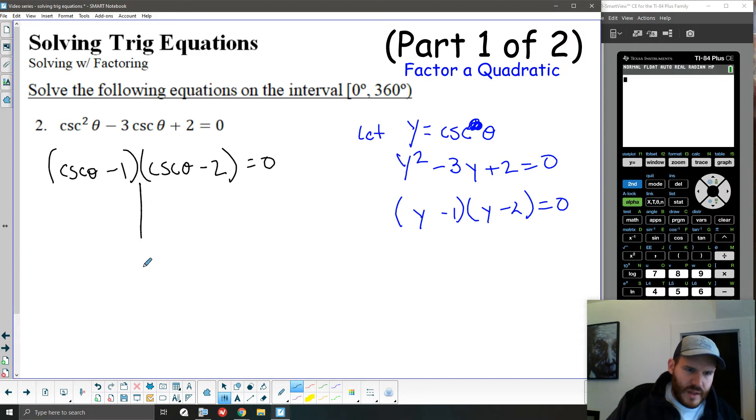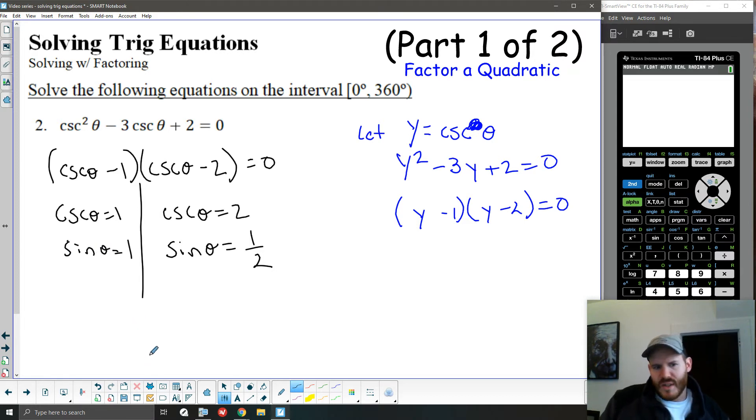Again, now that once we have a product, we can use the zero product property. So either cosecant theta is equal to 1 or cosecant theta is equal to 2. Now for me, we've talked about when we solved basic ones with the reciprocals. I don't know the reciprocal functions values offhand that well. So I always like to just convert these using reciprocal. So cosecant is the reciprocal of sine. So if cosecant is 2, the reciprocal of 2 would be 1 half. And similarly, I could do the same thing with 1, but 1 is convenient in that it's its own reciprocal.